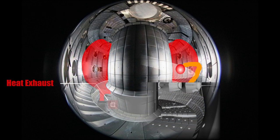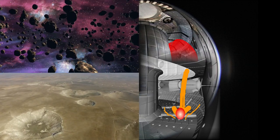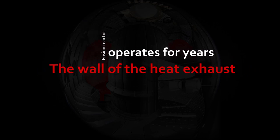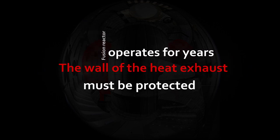These particles can easily damage the wall, like meteor impacts result in craters on the Moon. A fusion reactor must operate for years, and thus the wall of the heat exhaust must be protected.